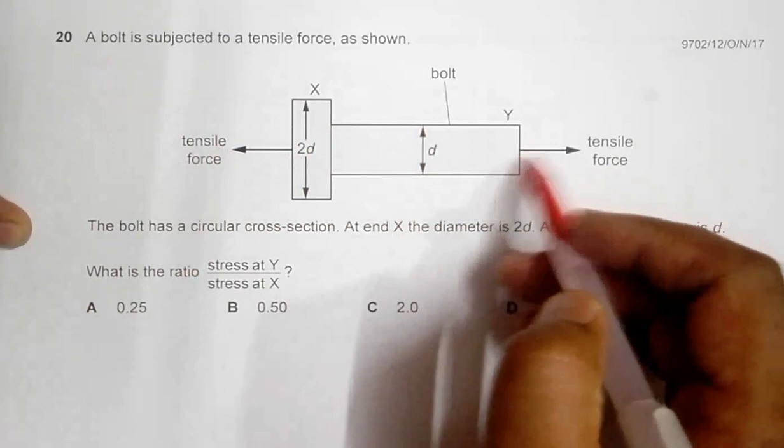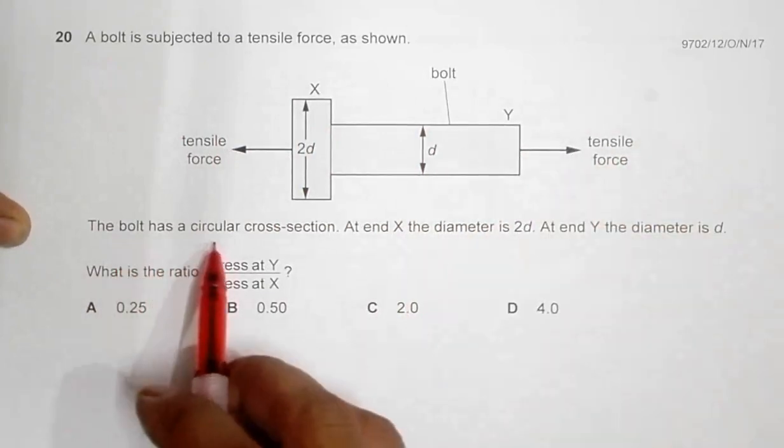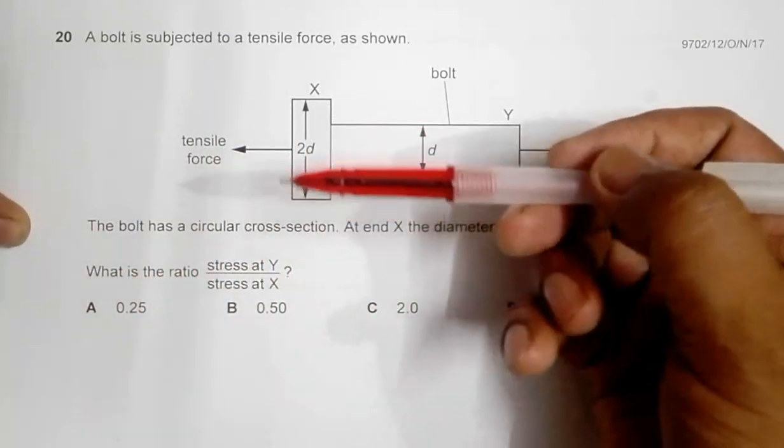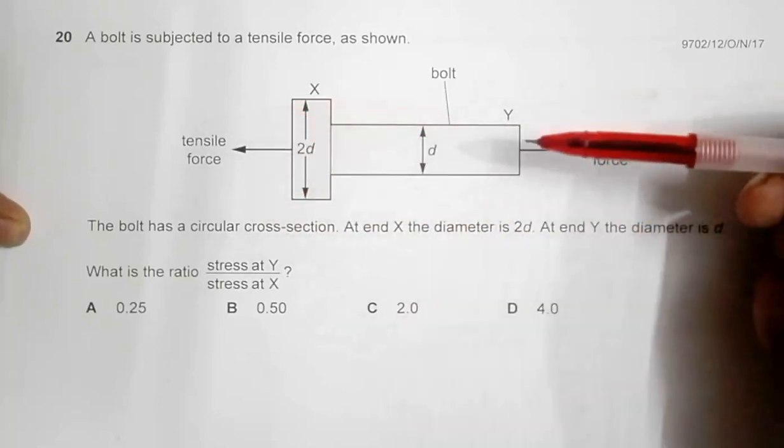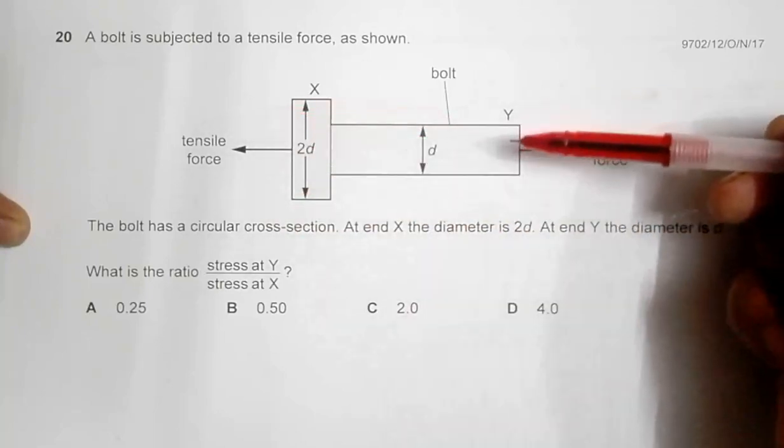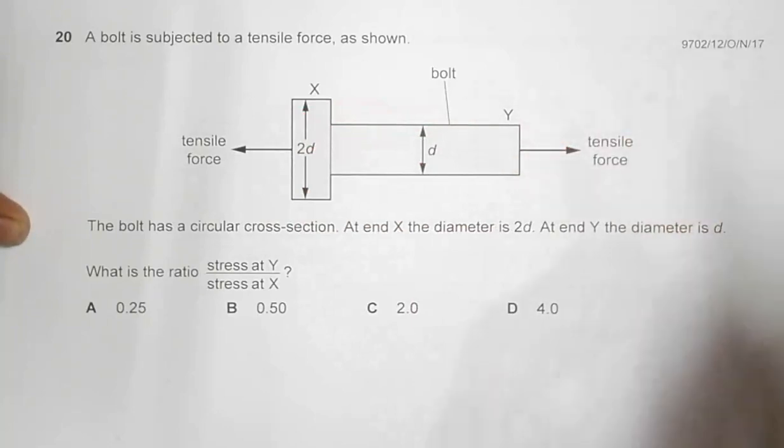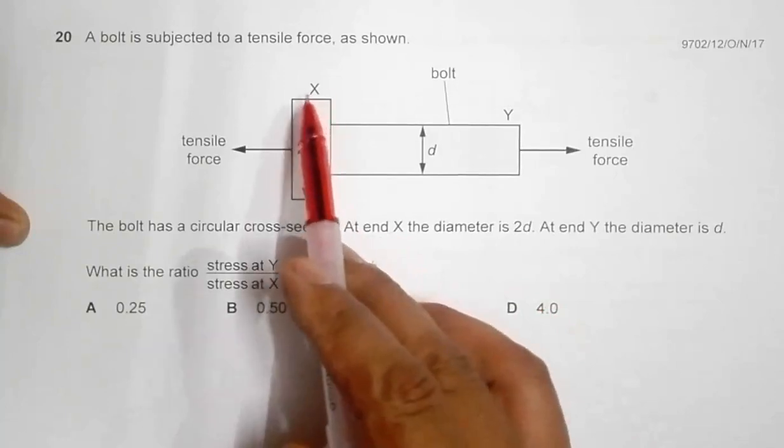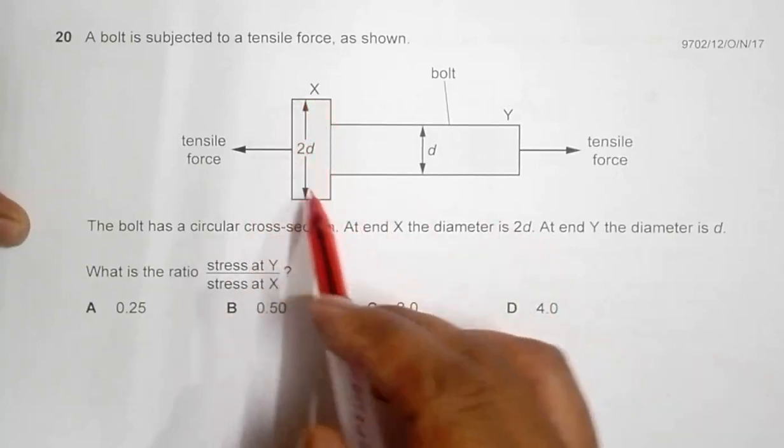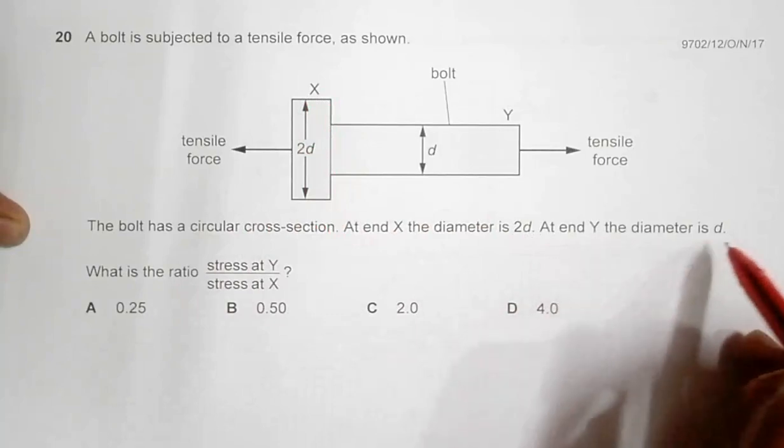The force is shown on both sides. The bolt has a circular cross-section, so this cross-section is circular as well as this cross-section. It might look like rectangles in a 2D figure, but they are circular. At end X the diameter is 2d, at end Y the diameter is d.